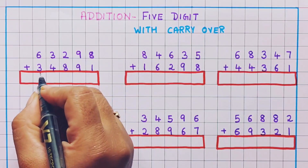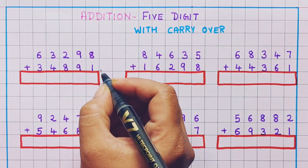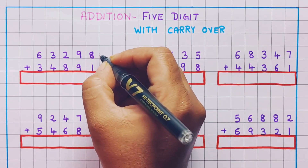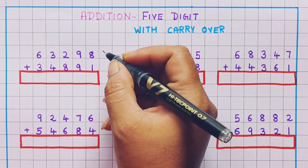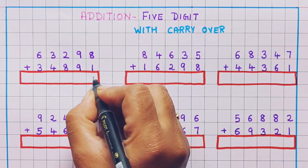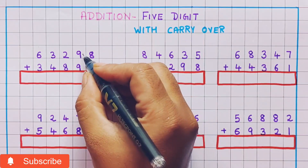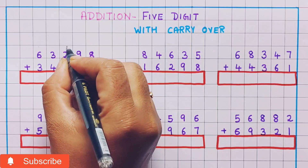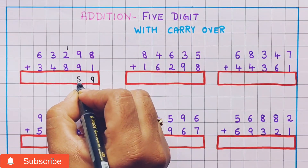63,298 plus 34,891. We are going to start the addition from the 1's place. So 8 plus 1 is 9, and 9 plus 9 is 18. I will write the carryover 1 and here I will write 8.